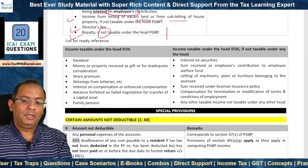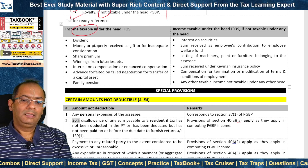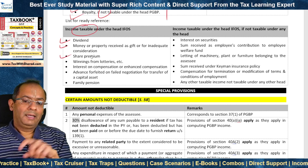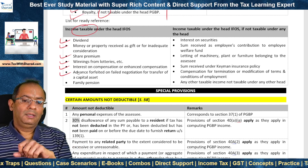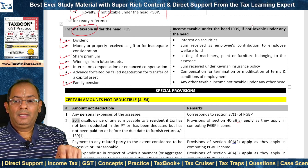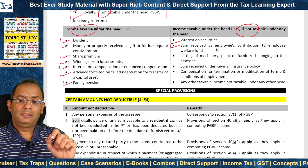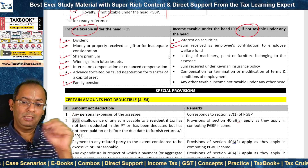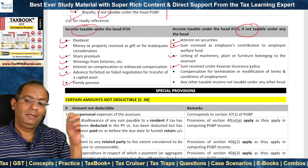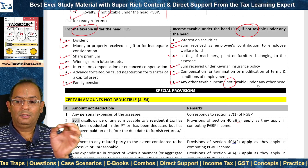For ready reference, a list of incomes taxable under IFOS: Specifically taxable — dividend; gifts (money or property received without consideration or for inadequate consideration); excess share premium; winnings; interest on compensation or enhanced compensation; advance forfeited on failed negotiation for transfer of a capital asset; family pension. Taxable under this head if not taxable under any other head — interest on securities; employees' contribution to employee welfare fund; letting of machinery, plant or furniture; sum received under keyman insurance policy; compensation; and any other taxable income not taxable under any other head.